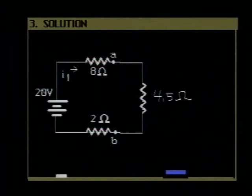Now we have three resistors in series, 8 ohms, 4.5 and 2, which, if we add them up, give us a total of 14.5 ohms, and that is the equivalent resistance of the circuit.